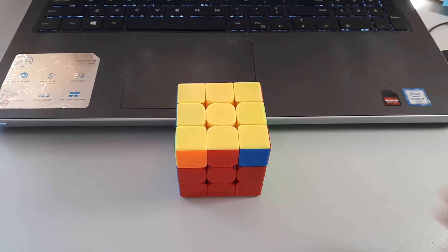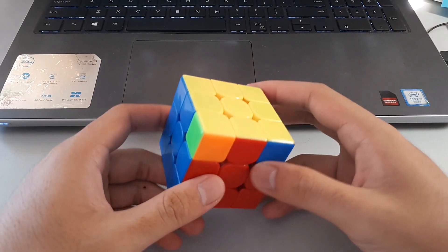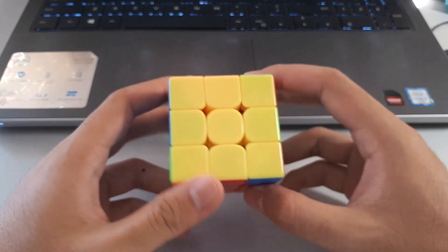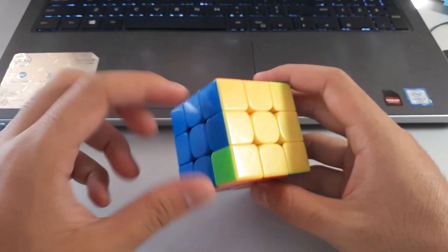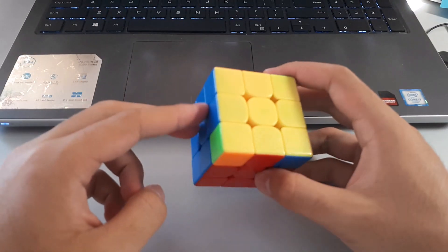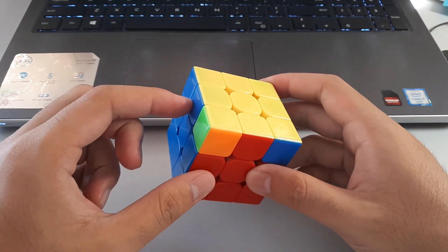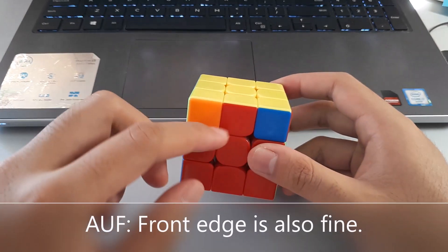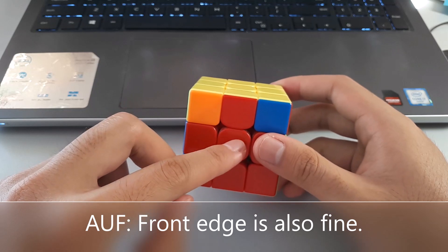If you use the algorithm that involves rotating upwards like this, you can still recognize AUF by looking at the block here at the back. But because it's at the back, it might be harder to see, so sometimes you could recognize it based on the front color here.